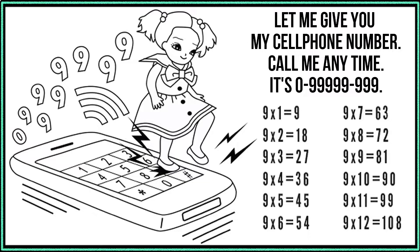Call me anytime. Nine times one is nine, nine times two is 18, nine times three is 27, nine times four is 36, nine times five is 45, nine times six is 54, nine times seven is 63, nine times eight is 72, nine times nine is 81, nine times ten is 90, nine times eleven is 99, nine times twelve is 108.